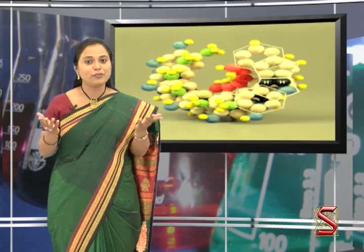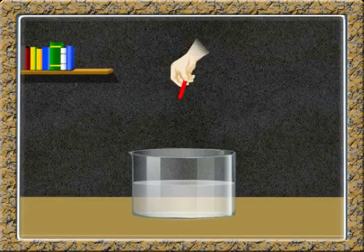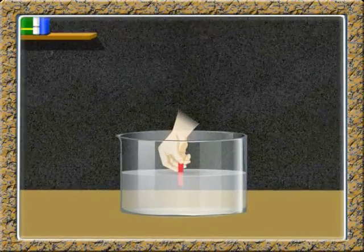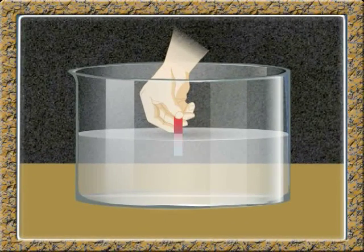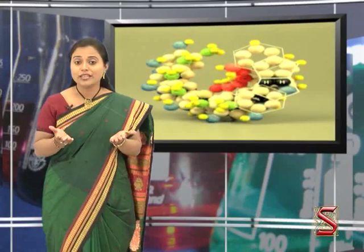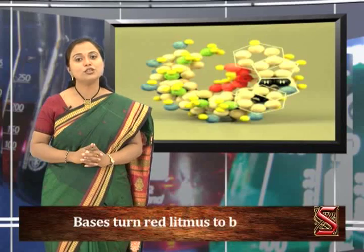Now it's the best time to learn about the properties of bases. Let us take this solution and put red litmus paper into this. It has changed to blue, so the solution must be a base. From this observation, we can say that bases turn red litmus to blue.